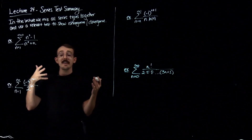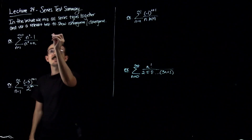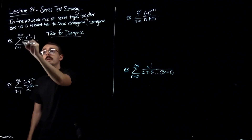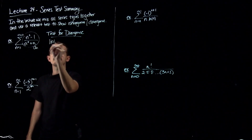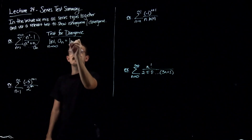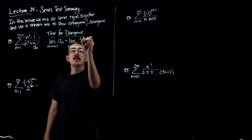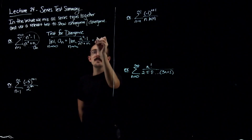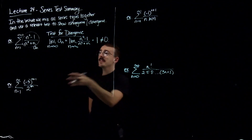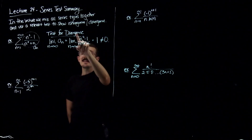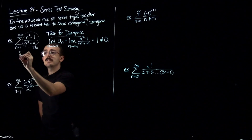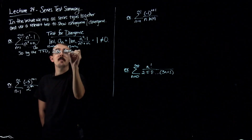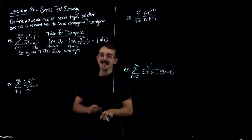However, the first thing I'm going to try — and I think you should always consider this quickly — is the test for divergence. What you do for the test for divergence is take a sub n and take the limit as n goes to infinity. So what happens when we take the limit as n goes to infinity of (n² − 1)/(n² + n)? We have the same degree in the numerator and denominator, so the ratio of the leading coefficients is 1, and this is not equal to 0. So by the test for divergence, the series diverges.